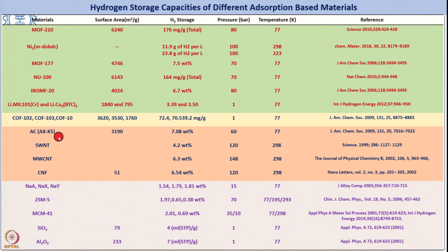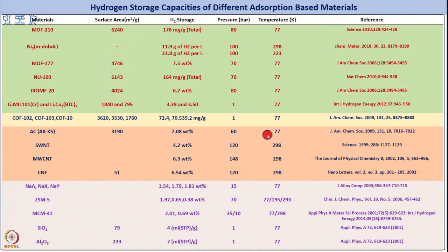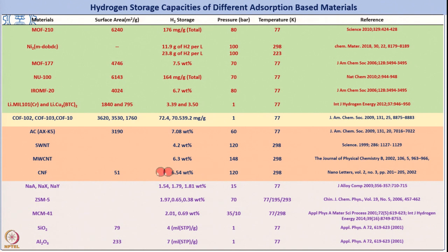For carbon-based nanostructures: activated carbon AXK5 (surface area 3190 m²/g) stores 7.08 wt% at 60 bar and 77 K. Single-walled carbon nanotubes store 4.2 wt% at 120 bar and 298 K. Multi-walled carbon nanotubes store 6.3 wt% at 148 bar and 298 K. Carbon nanofibers with very small specific surface area have been reported to store 6.54 wt% at 120 bar and 298 K.